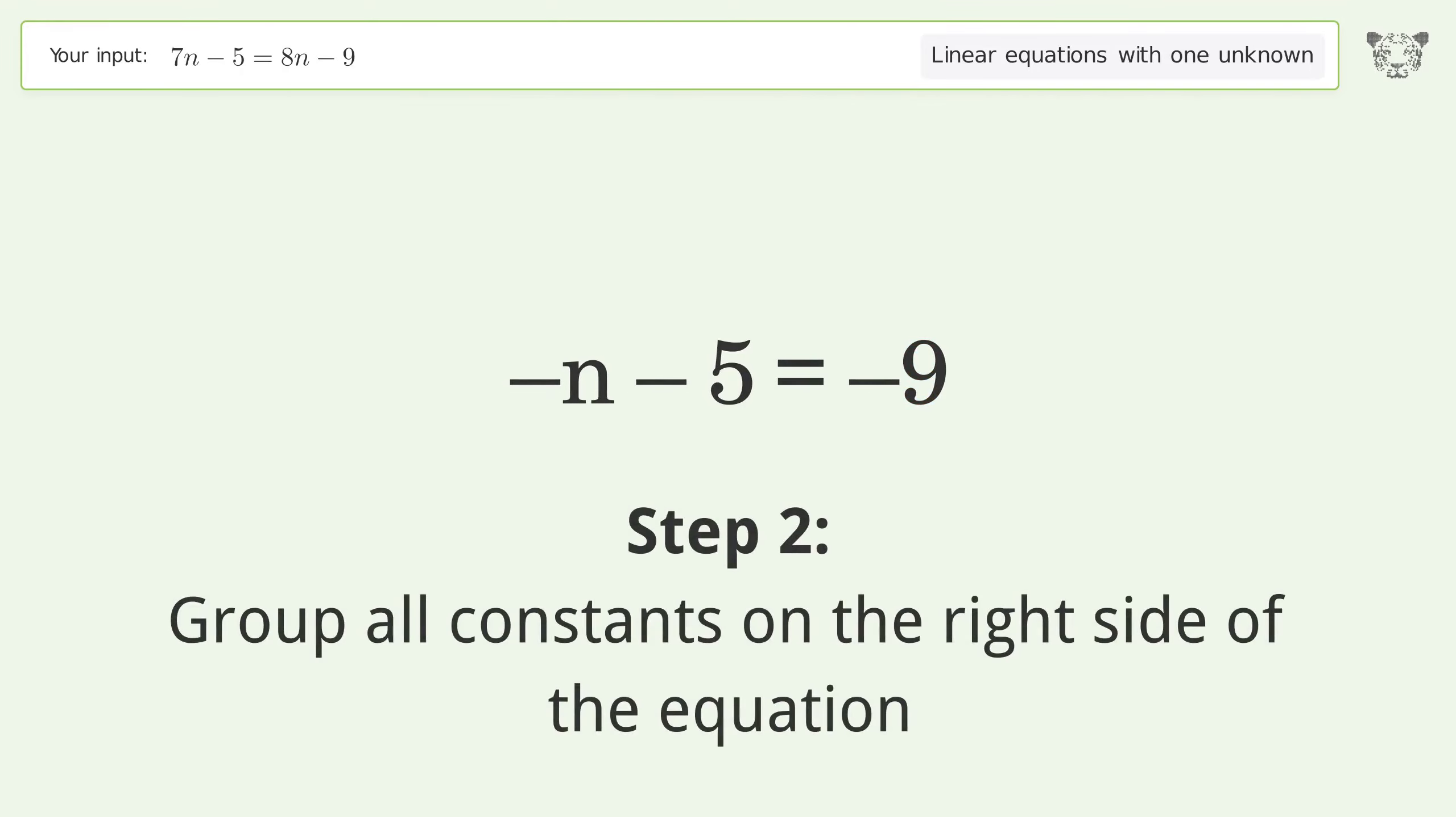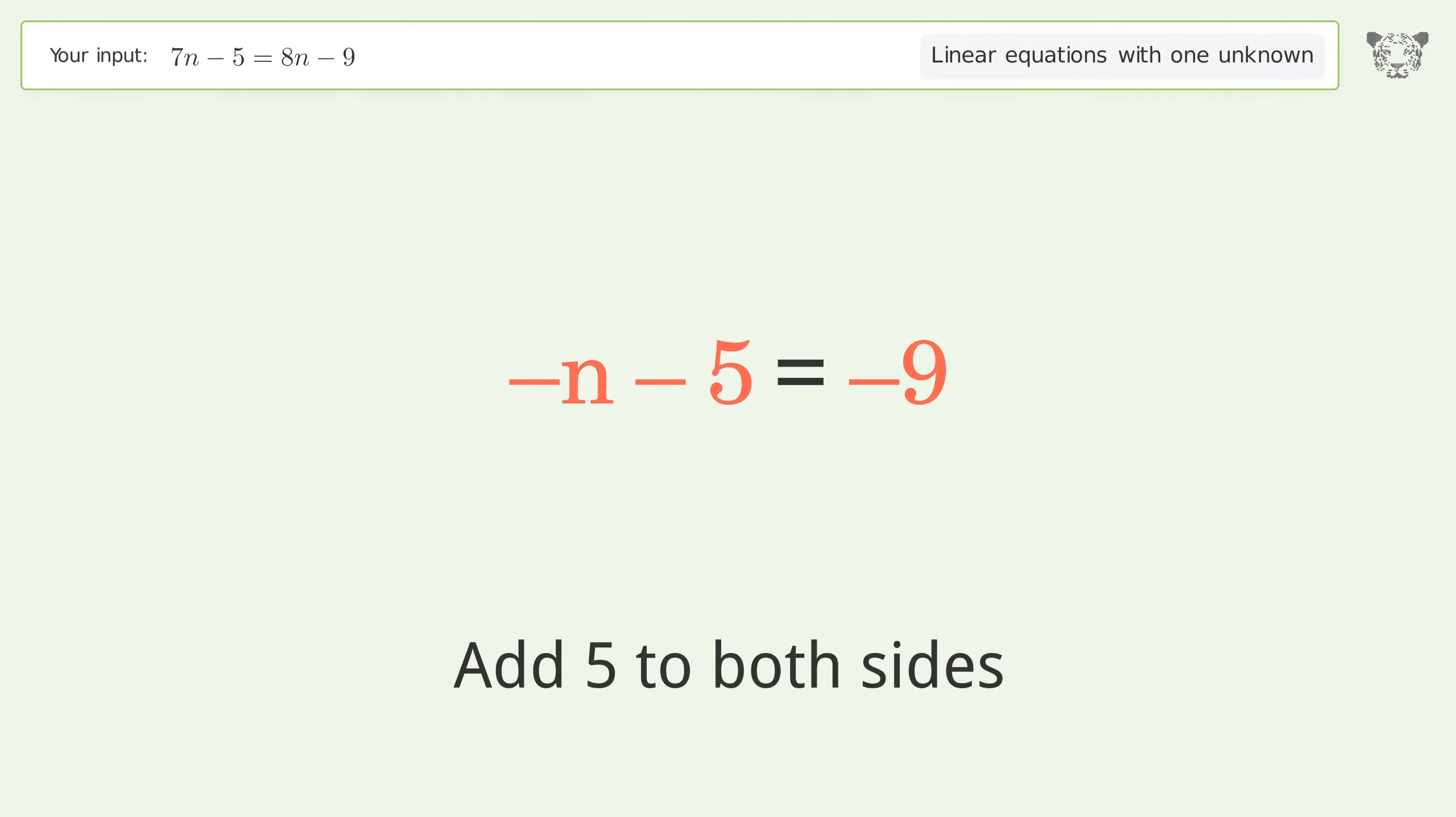Group all constants on the right side of the equation. Add 5 to both sides. Simplify the arithmetic.